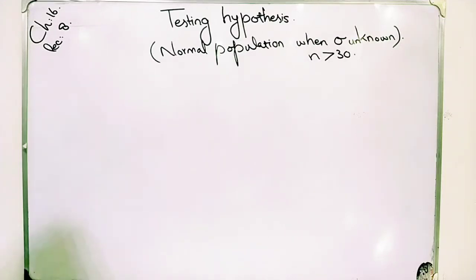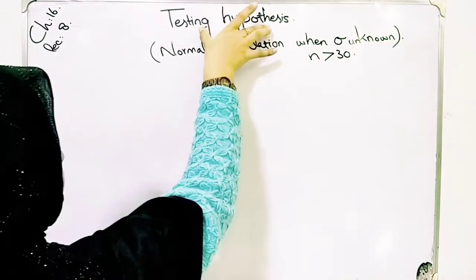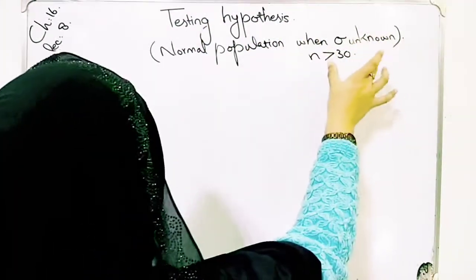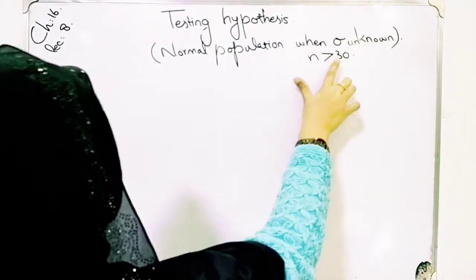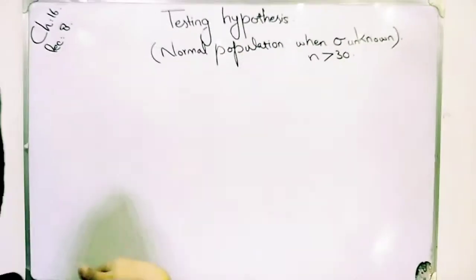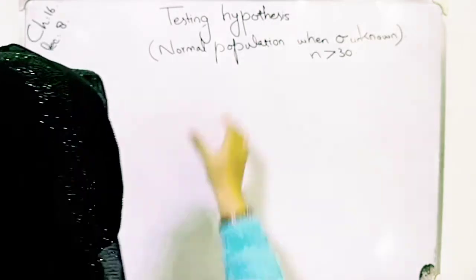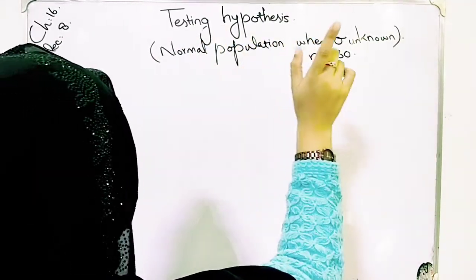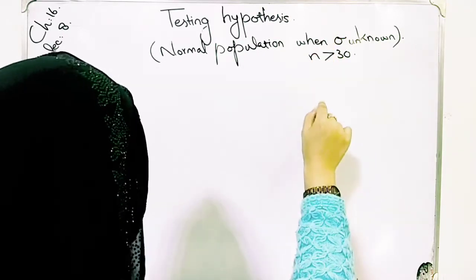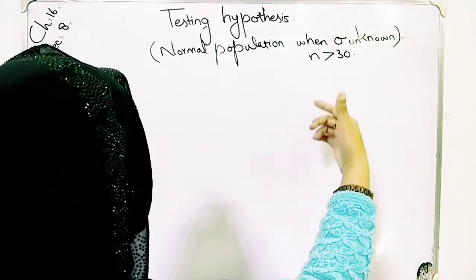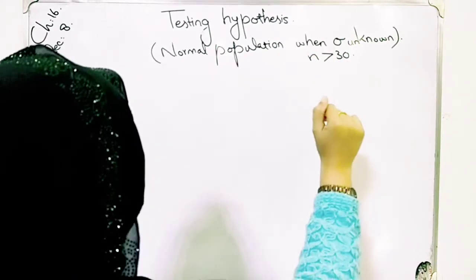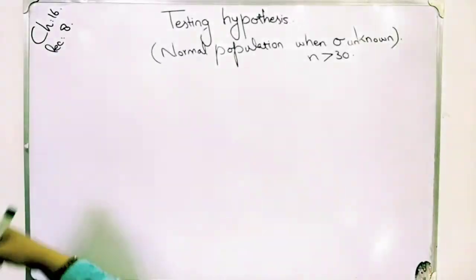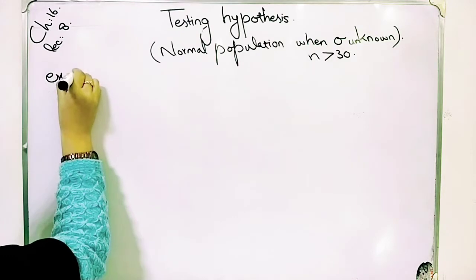Bismillahirrahmanirrahim. Students, our example is testing hypothesis related to a normal population where sigma is unknown and n is greater than 13. We have previous two examples in which we had a normal population. When sigma is known and given — if sigma is not given, then how do we solve this question? When sigma is unknown and n is greater than 13, I will give you an example.